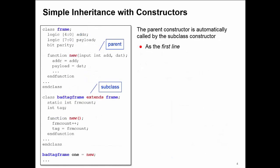One of the biggest problems we first face with simple inheritance is to do with constructors. What happens is that a constructor call for the parent is automatically added as the first line in the constructor call for the subclass. Here I have a constructor for my parent frame class.